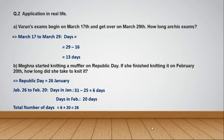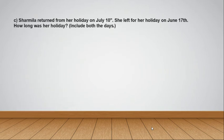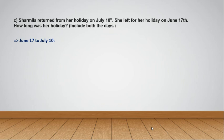Let's solve one more example. Sharmila returned from her holiday on July 10th; she left for her holiday on June 17th. How long was her holiday? Here we need to include both days. The starting date is June 17th and she returned on July 10th. Days in the month of June are 30.